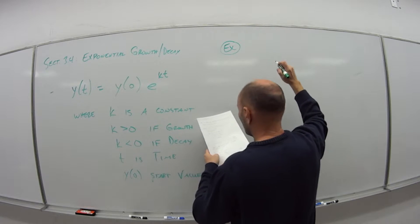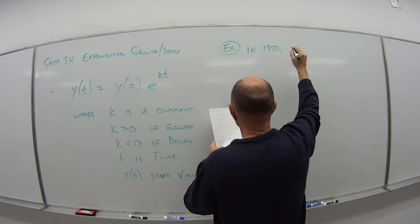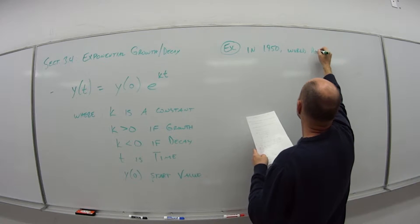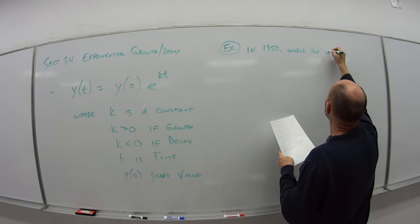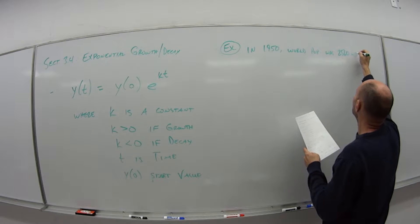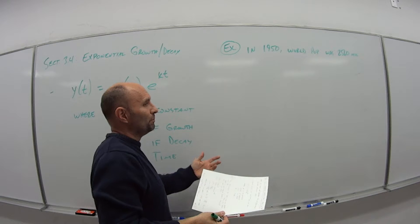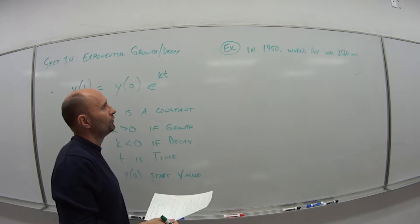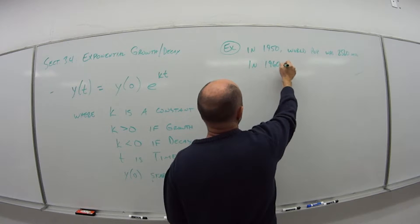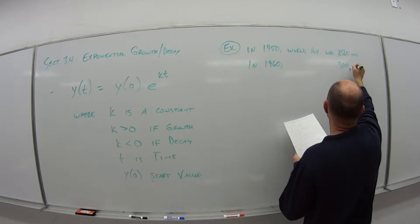So we have the following example using this idea of exponential growth or decay. In 1950, the world population was 2,560 million people. So that's 2.56 billion, but we're using it in terms of million here. Ten years later, in 1960, the world population was 3,040 million.